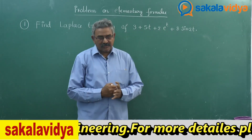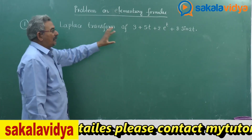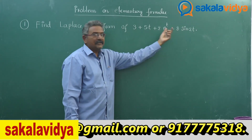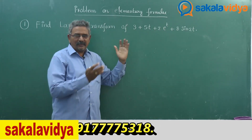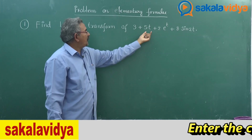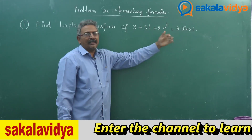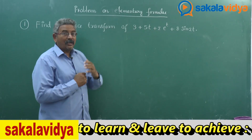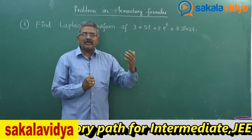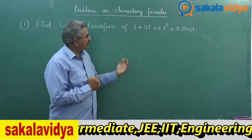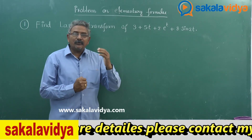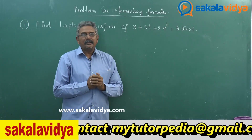Let me read the question first. Find the Laplace transform of 3 plus 5t plus 2e^t plus 8 sin(2t). In order to solve this problem, we need to recall three formulae: the Laplace transform of t^n, the Laplace transform of e^(at), and the Laplace transform of sin(at). If you can remember these three formulae, this problem can be solved easily.